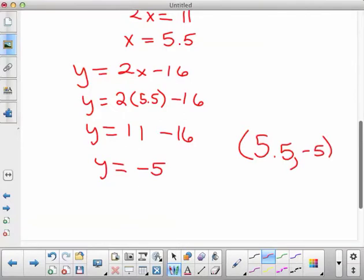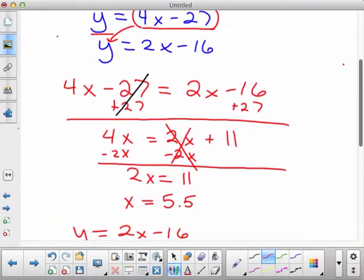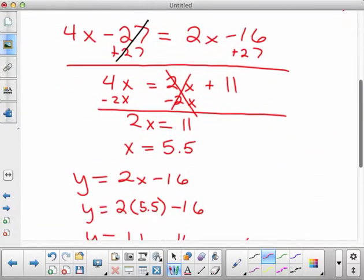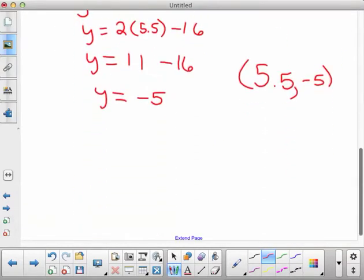There's a couple ways to verify whether this works. You could plug this into one of the originals, so maybe try the other one. So y equals 4x minus 27.